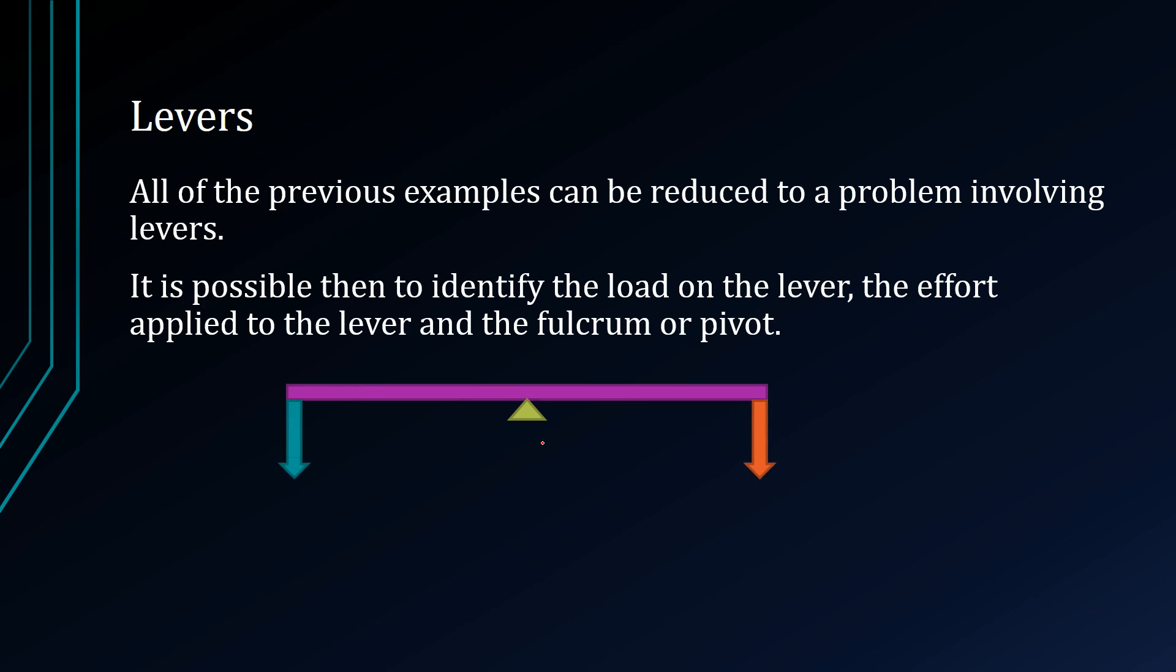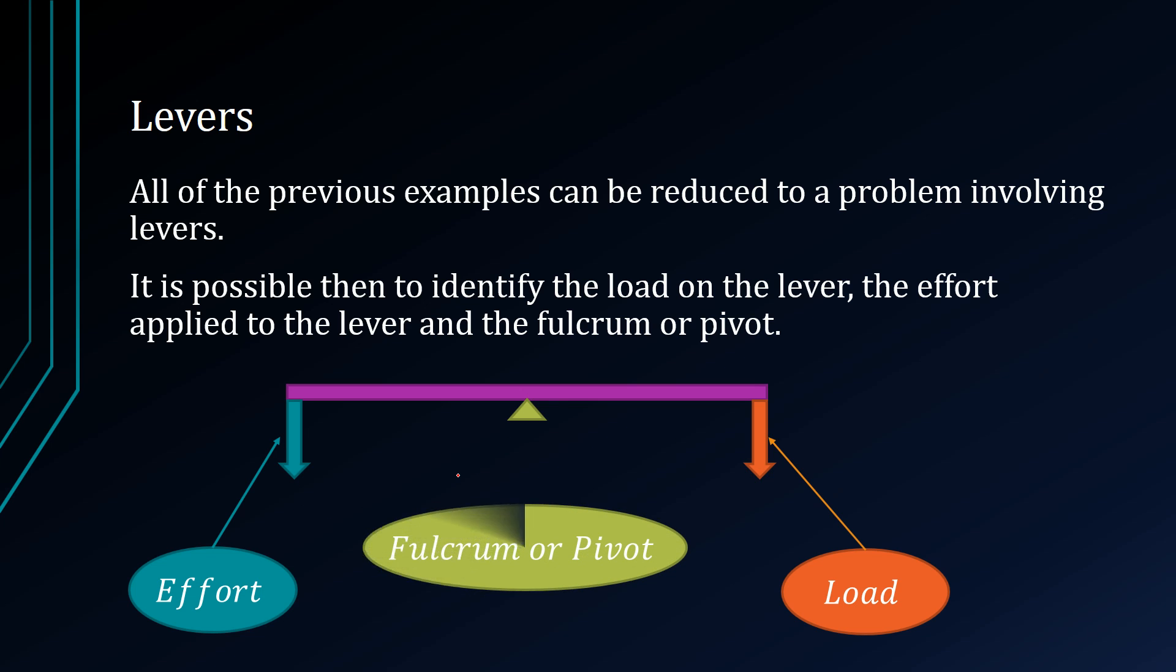Now let's say, for instance, we have this diagram here. The effort, in this case, can be on one side of the pivot, and we will call this side the effort. And on the other side, we will have the load. Now the load is simply what you're trying to lift when you're applying this effort. And we have the pivot, or the fulcrum, in the middle.